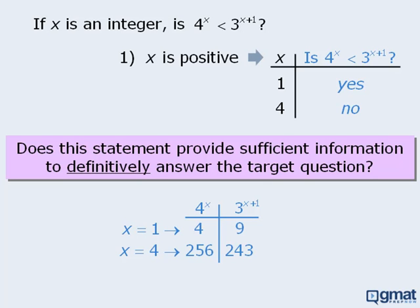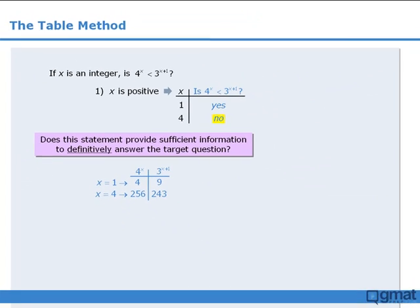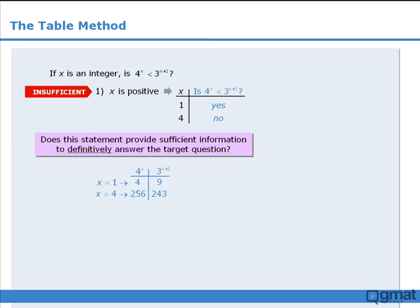So when x equals 1, the answer to our target question is yes, and when x equals 4, the answer to our target question is no. Since we cannot definitively answer the target question, statement 1 is not sufficient.